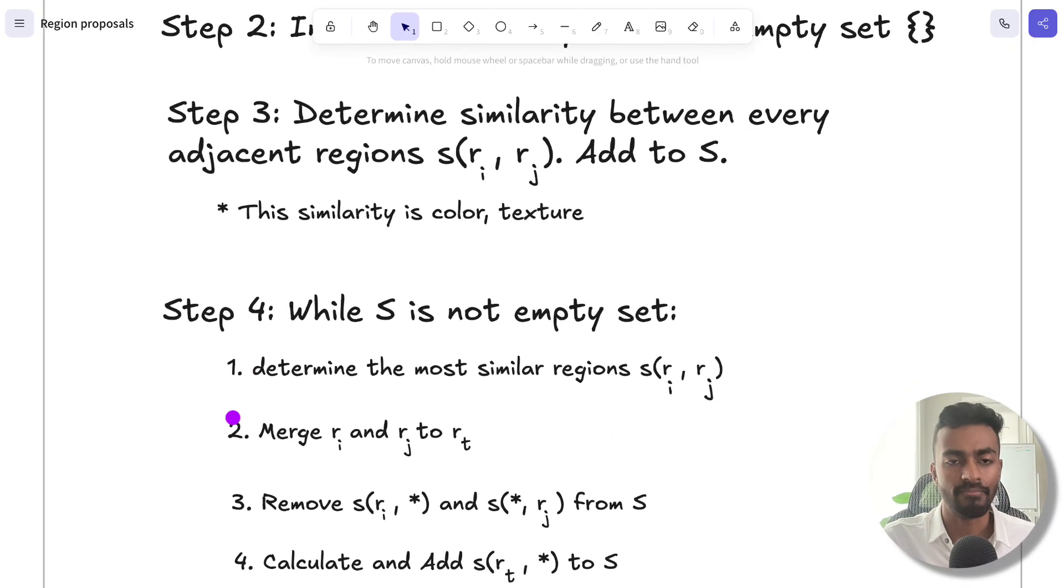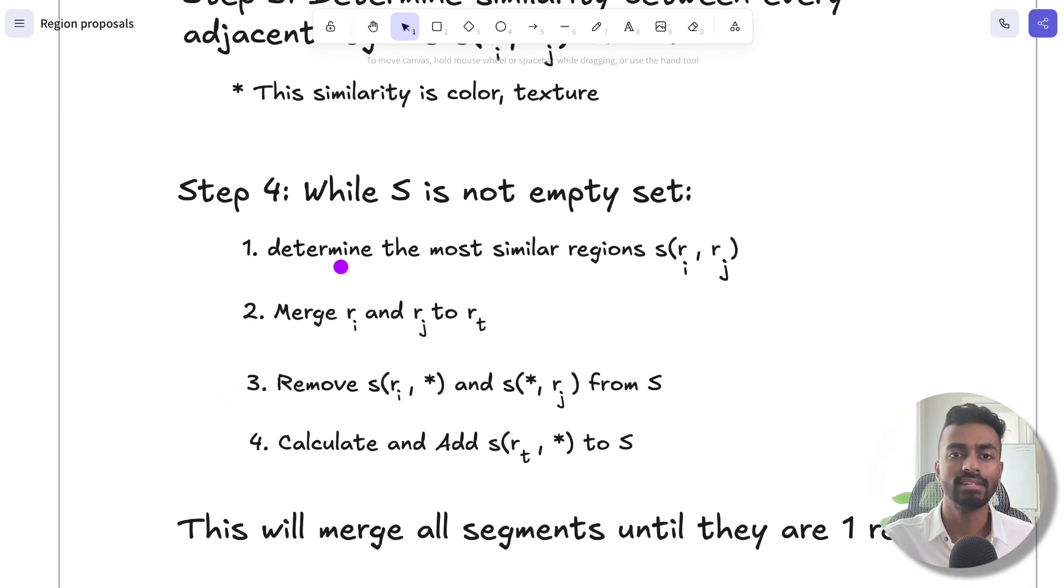Next, what we do is step four, where we iterate over all the region similarities that are in this set. We'll take the two regions with the highest similarity score, and we will now merge them together.